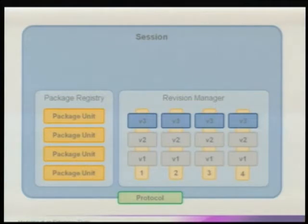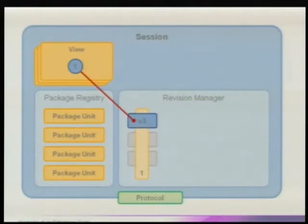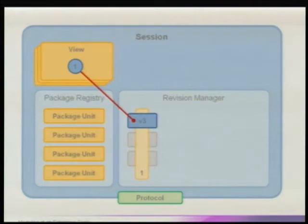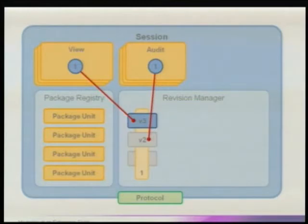Revisions are not EMF objects, and your application certainly wants to deal with objects, not internal CDO concepts. The missing concept is what we call a CDO view. A view looks at a certain branch in the repository at a certain time and selects the appropriate revisions for a given object. The default view always gives you the latest version. There is also an audit view where you configure a timestamp, and it selects historical revisions, showing a consistent historical state of the object graph.